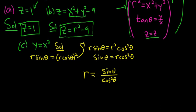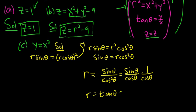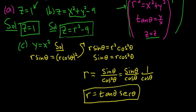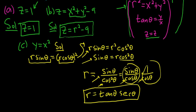We can rewrite sine theta over cosine squared theta as sine theta over cosine theta times 1 over cosine theta. Sine over cosine is the tangent function, and 1 over cosine is the secant function. So r equals tangent theta times secant theta. That was the hardest example — we replaced y with r sine theta and x with r cosine theta, divided by r, then divided by cosine squared, and broke up the result into tangent times secant.